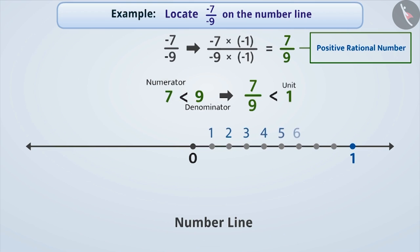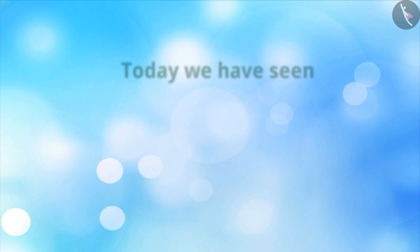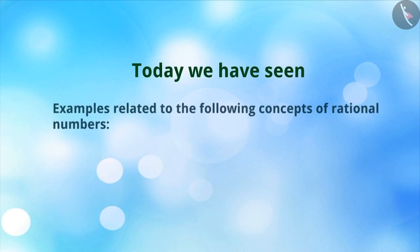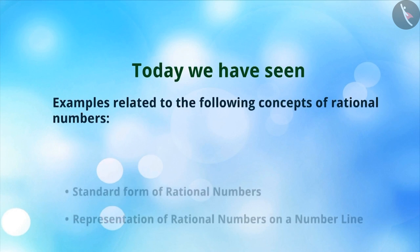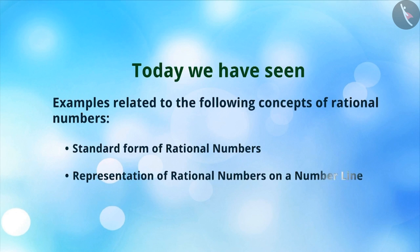We reach 7 by 9. Since 7 by 9 equals minus 7 by minus 9, the rational number minus 7 by minus 9 is also denoted at this point. We have seen examples of the concepts related to rational numbers. In the next video, we will see some common mistakes related to them.